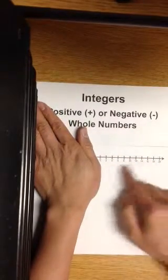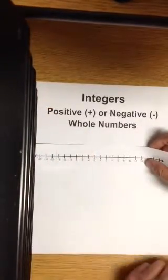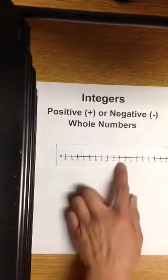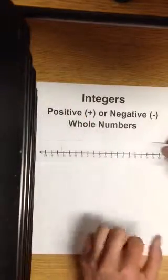On this side it's negative, has a negative sign in front of it. So we have positive and negative. Positives are to the right of zero, negatives are to the left of zero.